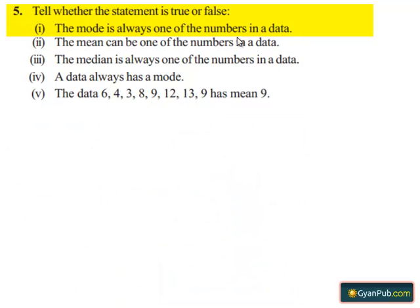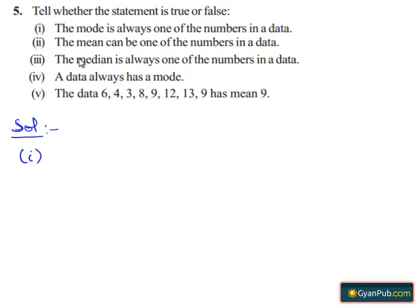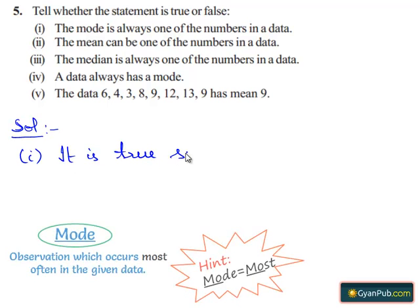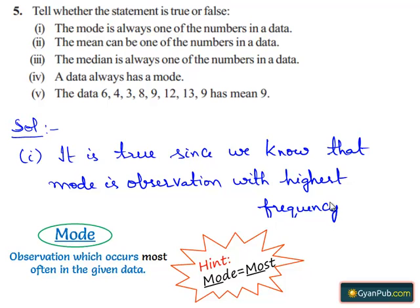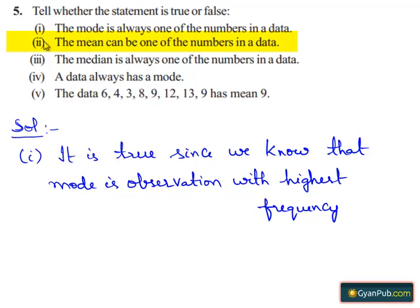First part: the mode is always one of the numbers in a data. Now let us find the solution for the first part. Here they have asked us whether the mode is always one of the numbers in a data. It is true, since we know that mode is the observation with the highest frequency. Therefore the above statement is true. Now let us move on to the second part.